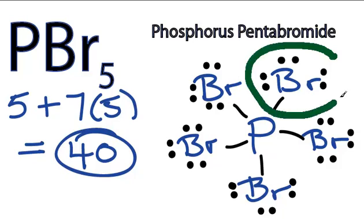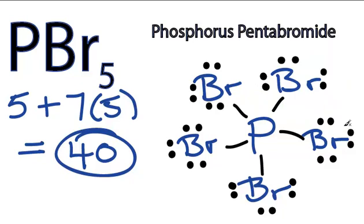So all the bromines right now have 8 valence electrons, 2, 4, 6, 8, so their outer shells are full.